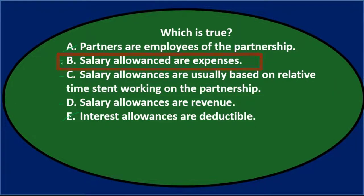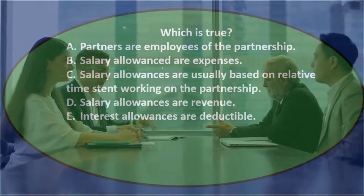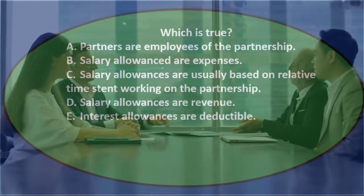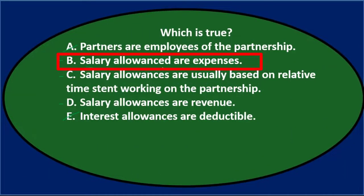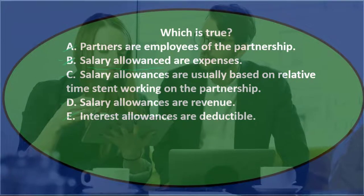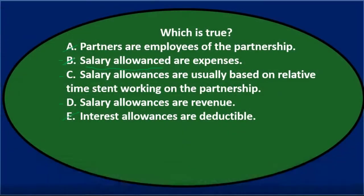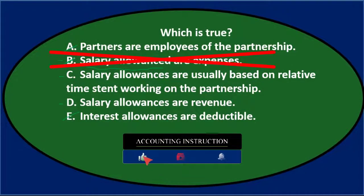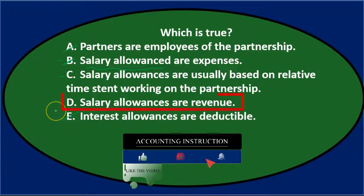It's useful to clarify what a salary allowance is — it's not wages, it's not payroll. The key of this question is we're talking about an agreement in the partnership agreement to pay each partner a fixed share of net income, which we call a salary allowance. No payroll taxes, no withholdings. So it's not B, because it's not an expense — it's part of the net income allocation, like allocating first by salary allowance, then 50/50 for whatever's left.